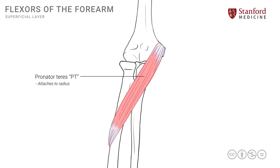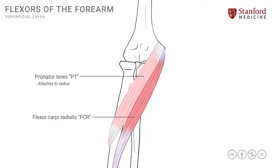The second muscle in this group is known as flexor carpi radialis, often abbreviated as FCR. It is situated on the medial side of the pronator teres and has the same attachment onto the medial epicondyle, then extends down into the distal forearm on the radial side. This muscle has action on the wrist because it crosses the wrist joint, unlike the pronator teres. The name describes its function and location: flexor means flexion, carpi relates to the carpus or wrist, and radialis indicates its position on the radial side. It attaches onto the base of the second and third metacarpals.